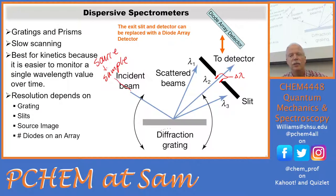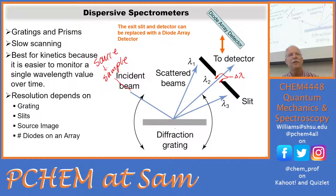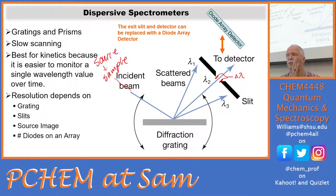Dispersive instruments are slow because we have to move the grating or prism. We sit at a particular wavelength for a time constant, then move and look again, taking measurements at each wavelength. If we want high resolution there's not very much light, so we have to build up our signal and go very slowly. The highest resolution spectrum in our course is the visible spectrum of iodine — the last lab — which took over 30 minutes to collect.